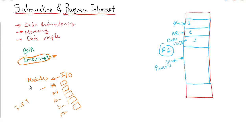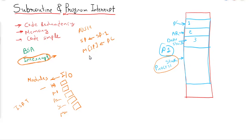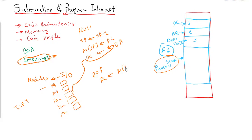This table helps us get the address of the particular routine that will execute instructions for a particular device. For managing this, the process stack is used, and the stack has two operations: push and pop. For the push operation: SP = SP - 1, then Memory[SP] = PC, and then PC is loaded with the effective address of the particular device routine. For the pop operation: PC = Memory[SP], then SP = SP + 1.